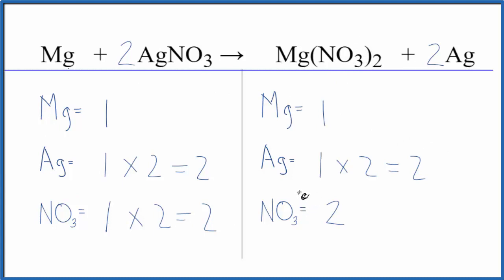Either way, you get the same answer. This is Dr. B with the balanced equation for Mg plus AgNO3, magnesium plus silver nitrate. Thanks for watching.